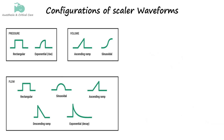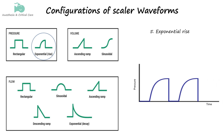The rising exponential waveform is the fifth type, and it displays a sharp increase in value followed by a gradual plateau. This means the breath delivery starts off with a rapid rise in value, which then levels off and stabilizes as the breath continues.